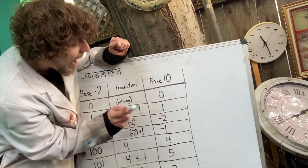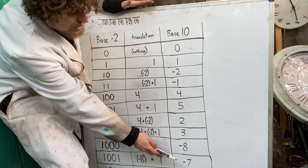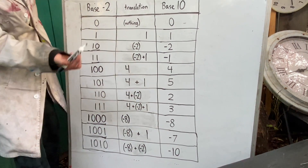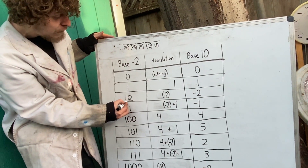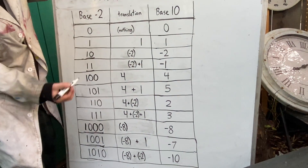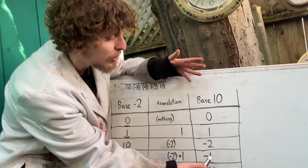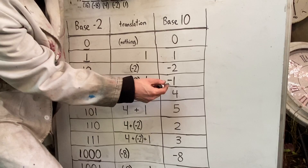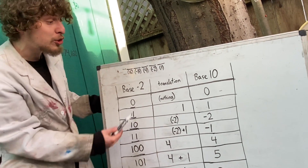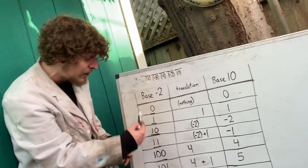We can see negatives pop up on this list — 10 in base negative 2 means negative two, and 11 translates to negative one. If I continued this pattern, the order would be chaotic, but I would encounter not only every single positive integer but also every single negative integer. The even-digit strings are exactly those that represent negative numbers, while strings with an odd number of digits represent zero or positive numbers. Unlike base 10, in base negative 2 there's a representation of all negative and positive integers without needing a negative sign.